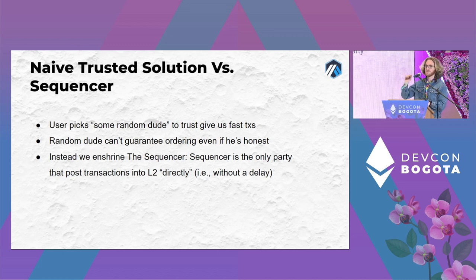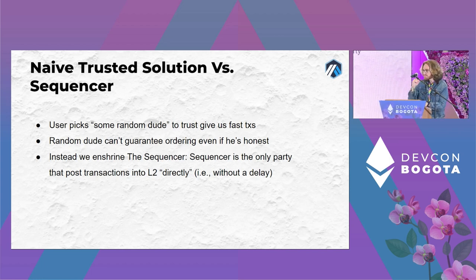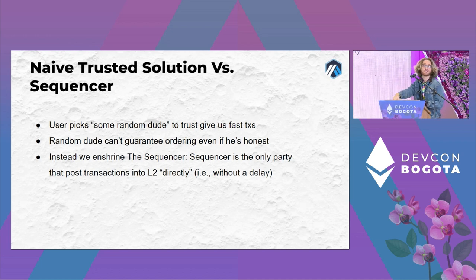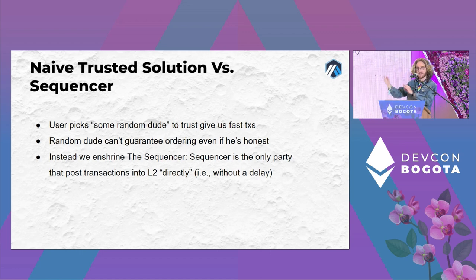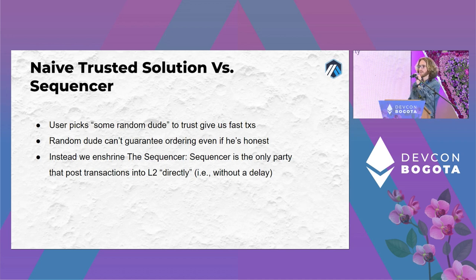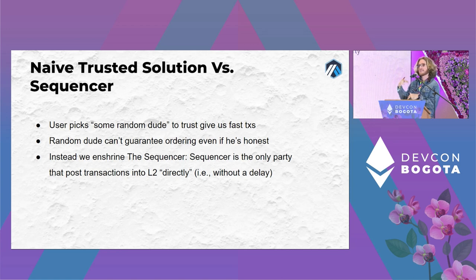The naive solution of letting a user trust whoever they want doesn't quite work because even a trustworthy party can't predict the future — someone else might get there first. So to have a trusted solution like this, you need to enshrine a party within the protocol and give it special permissioned privilege. That's what the sequencer is: the party we give the ability to directly post transactions into L2. Everyone else has to wait, so the sequencer can give trusted soft confirmations.